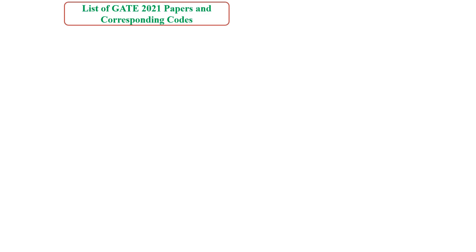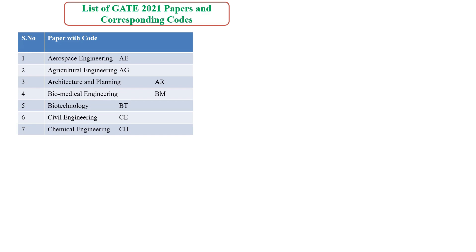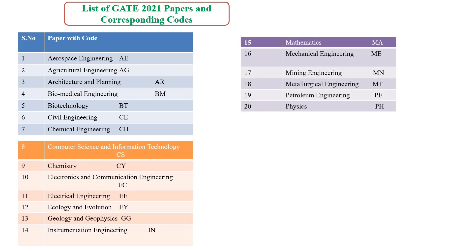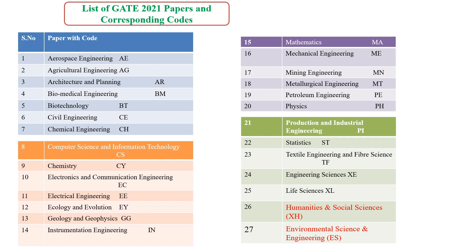Now we will see the list of GATE 2021 papers and corresponding codes. These codes are very important depending on your branch. For example, Aerospace Engineering is code AE, Agriculture is AG, and Metallurgical Engineering is MT. Previously GATE had only 25 papers, but this year they increased the number to 27 by adding Humanities and Social Sciences, Environmental Science, and Engineering Science.